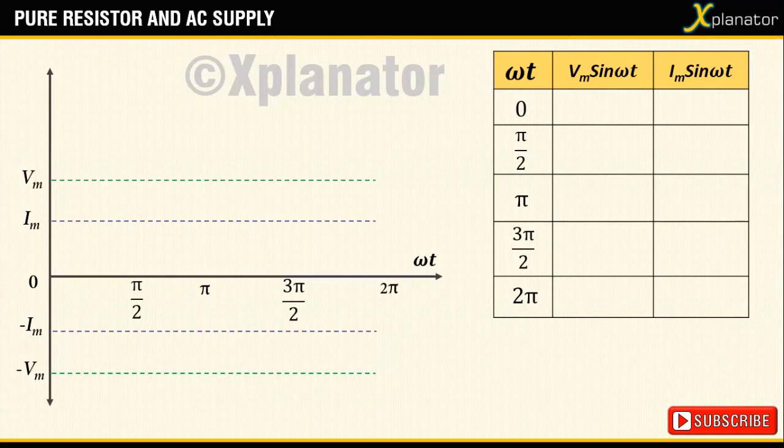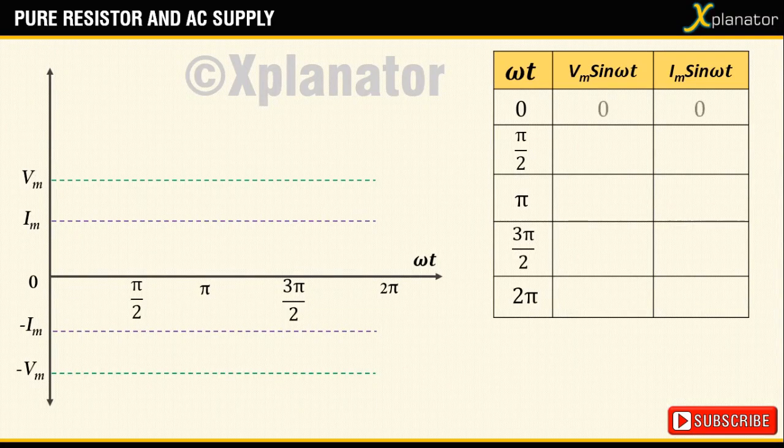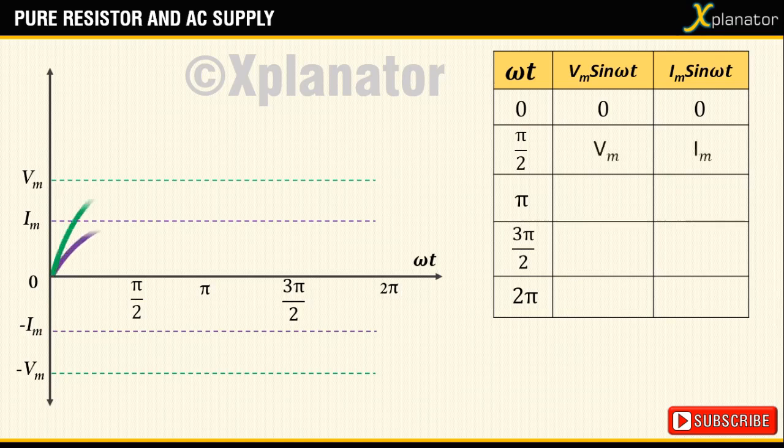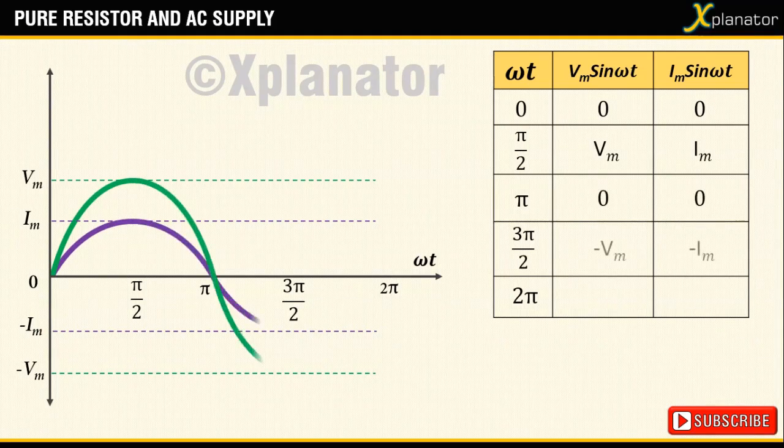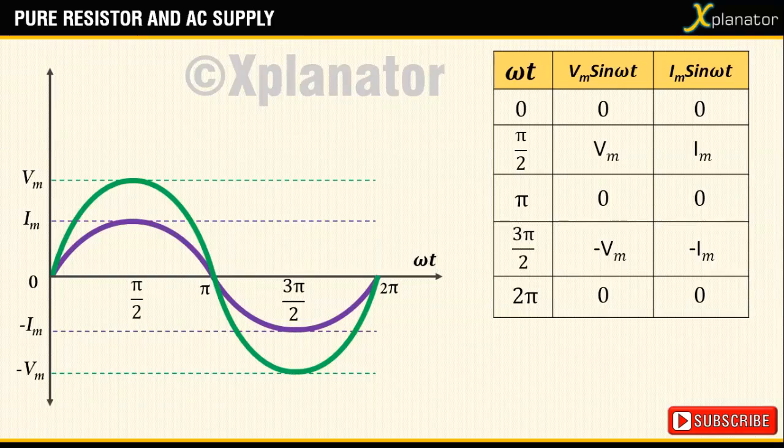Tabulate the plot for different values of omega t, that is in this case 0, pi by 2, pi, 3 pi by 2, and 2 pi, and draw the corresponding plot.